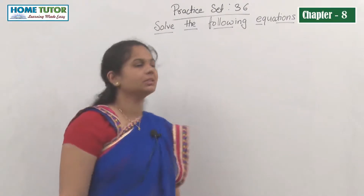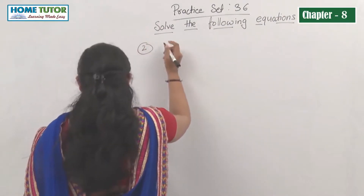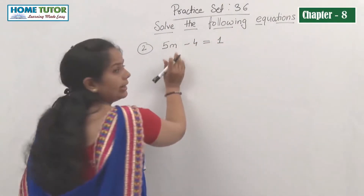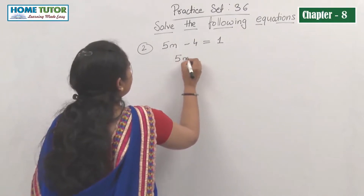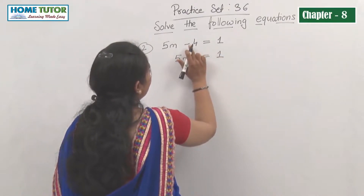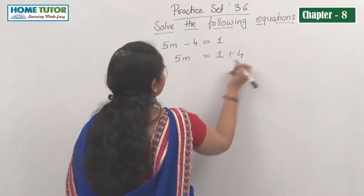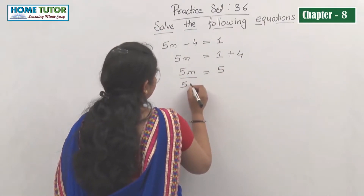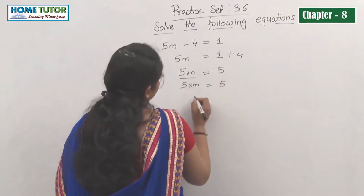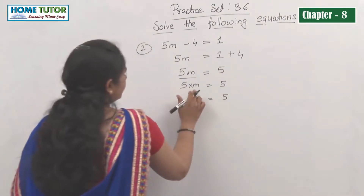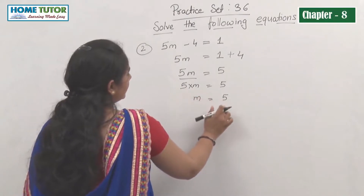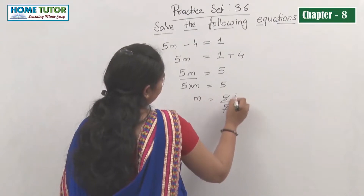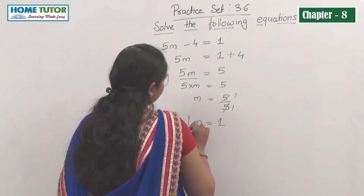Next equation: 5m minus 4 equals 1. We need to find the value of m. We write 5m equals 1, and the minus 4 moves to the right and becomes plus 4, giving 5m equals 5. Since 5 is multiplied by m, it moves to the right as division: m equals 5 divided by 5, so the value of m is 1.